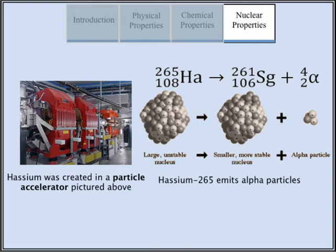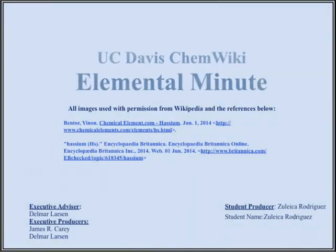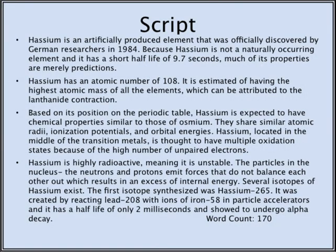Several isotopes of hasium exist. The first isotope synthesized was hasium-265, created by reacting lead-208 with ions of iron-50 in particle accelerators. It has a half-life of 2 milliseconds and is shown to undergo alpha decay.